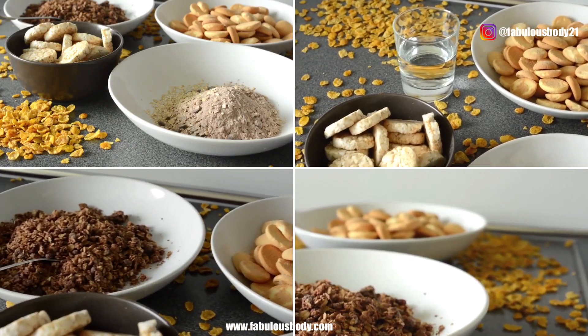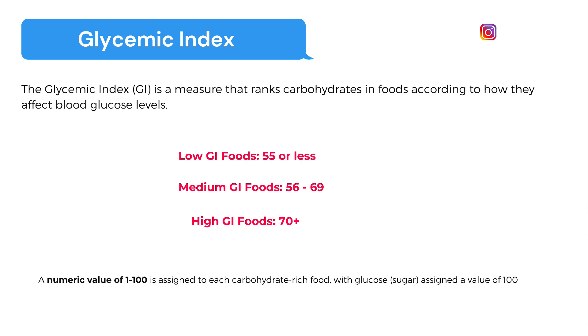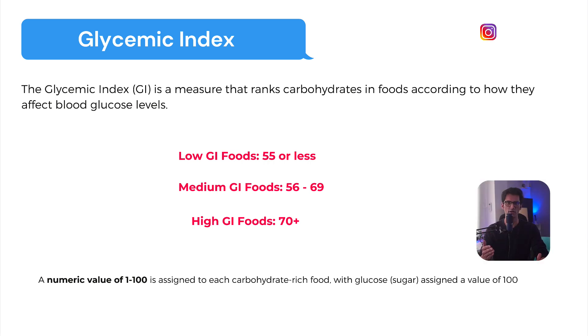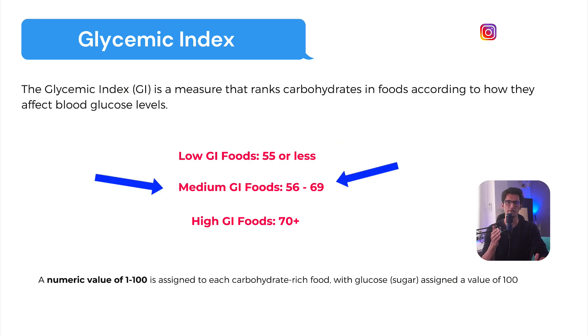Not all carbohydrates are created equal — different carbohydrate-containing foods affect blood sugar differently. The glycemic index is a measure that ranks carbohydrates in foods according to how they affect blood glucose levels. A numeric value from 1 to 100 is assigned to each carbohydrate-rich food, with glucose assigned a value of 100. The GI system divides carbohydrate foods into three categories: low GI (55 or less), medium GI (56–69), and high GI (70 and above).